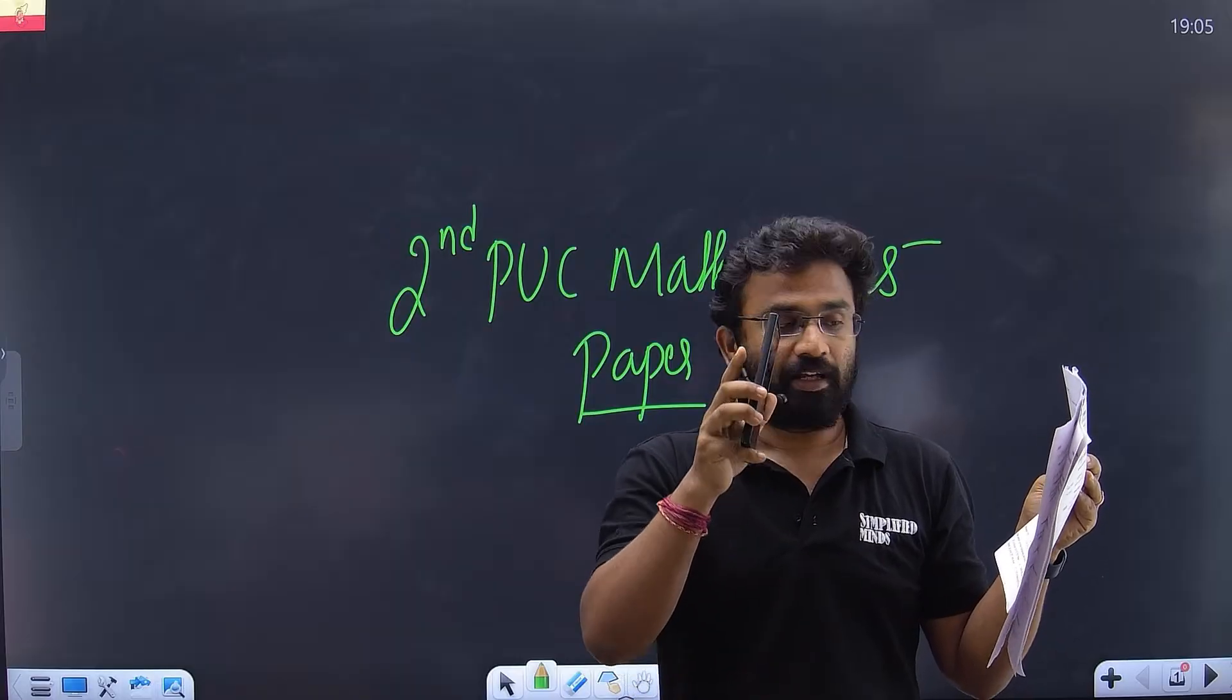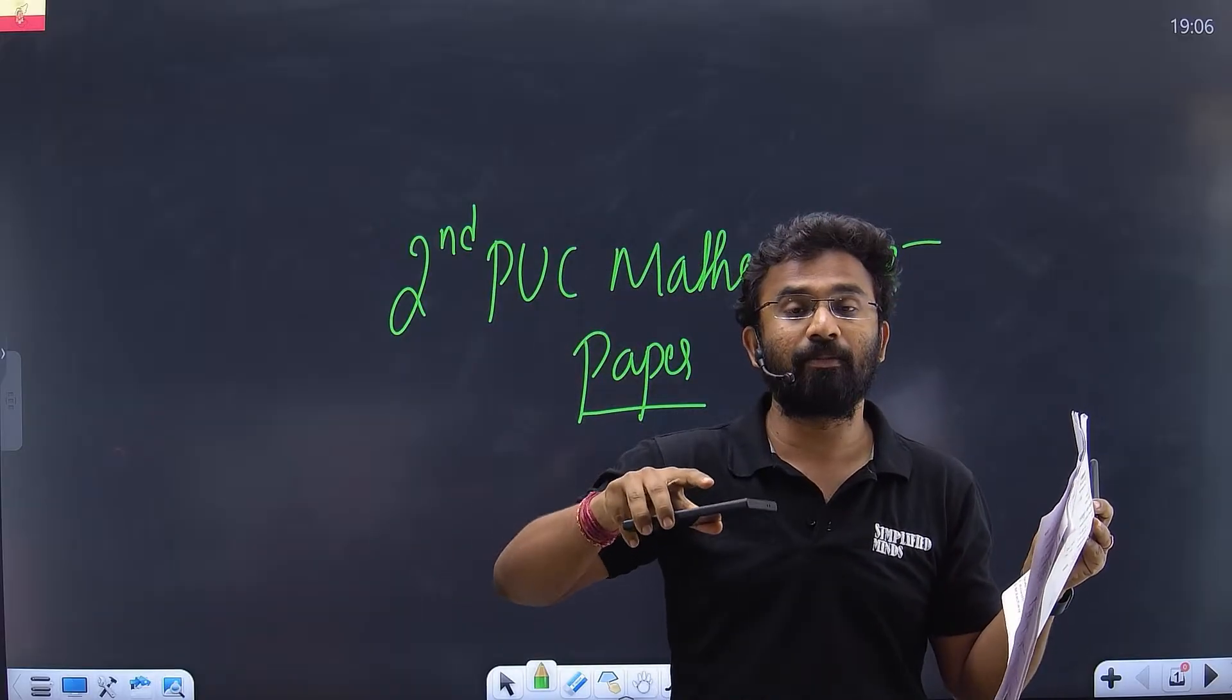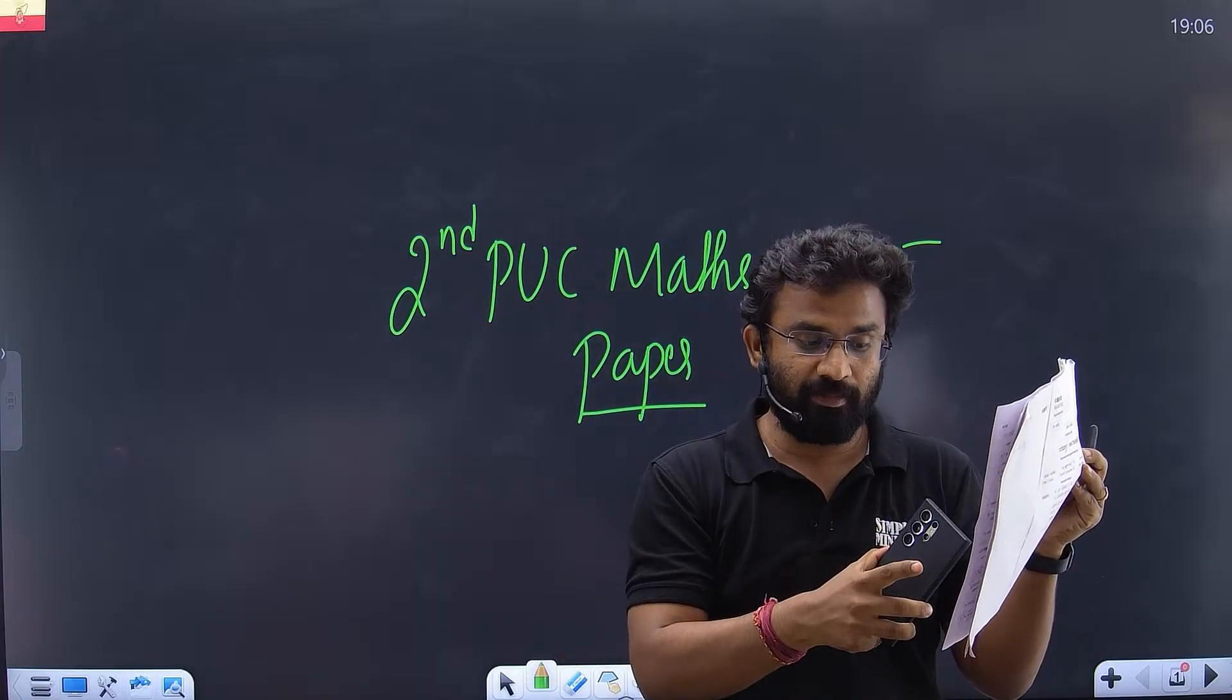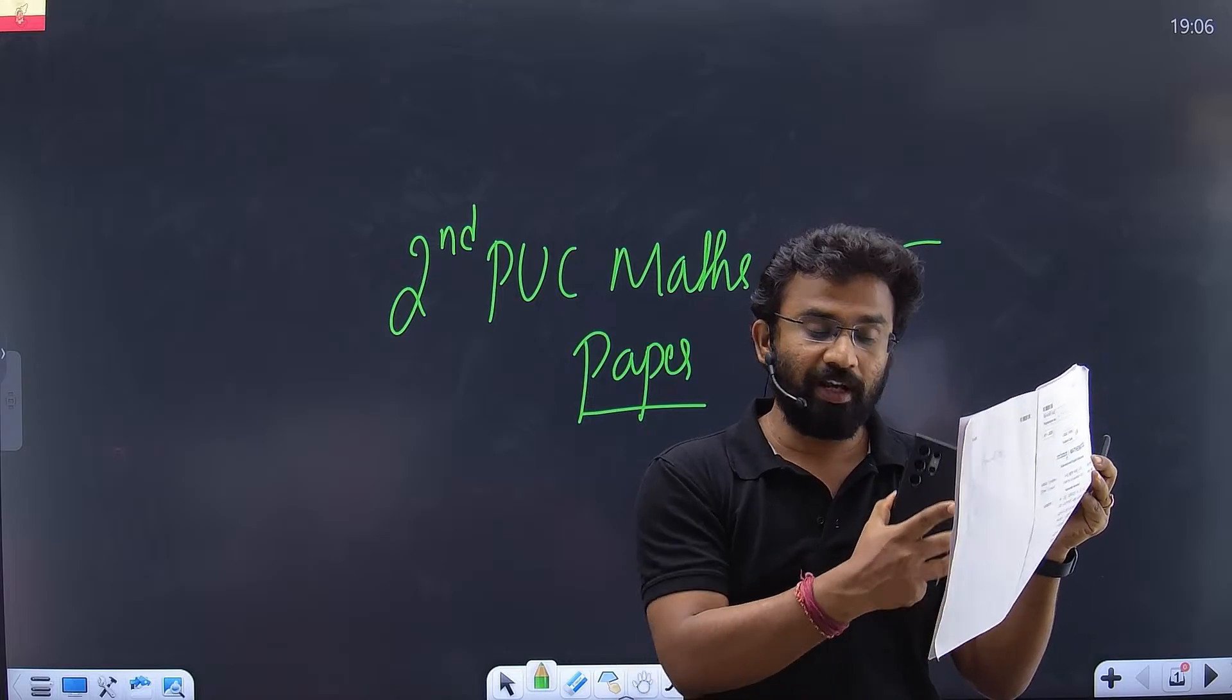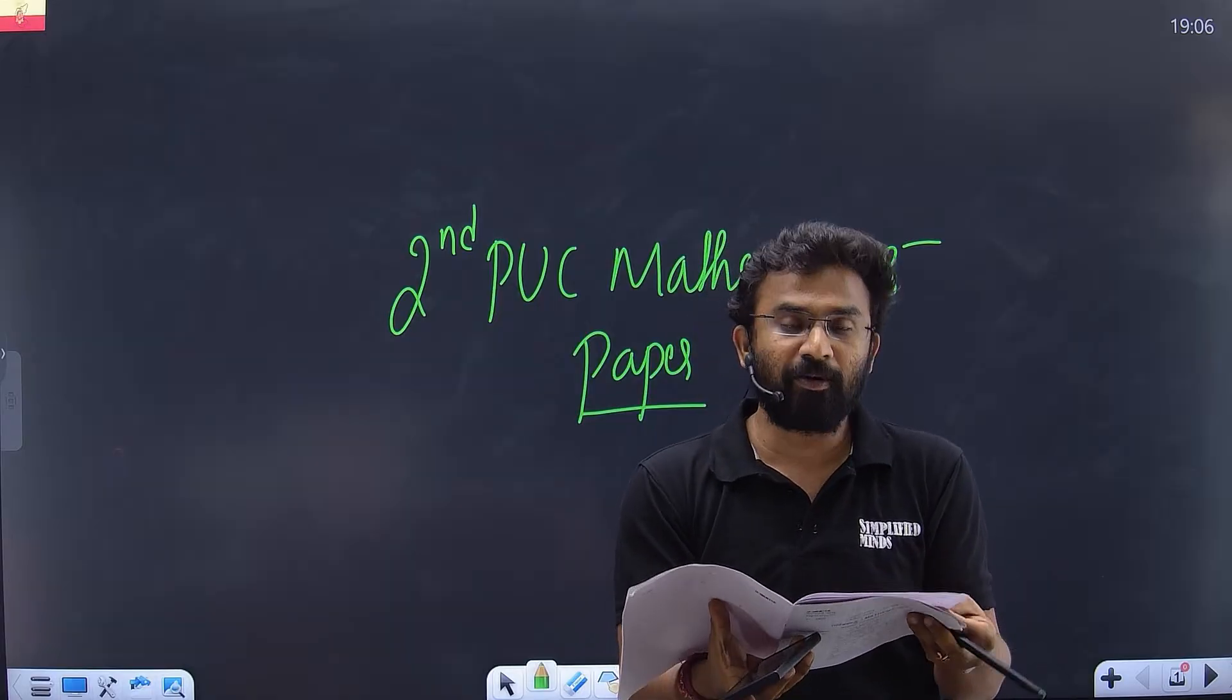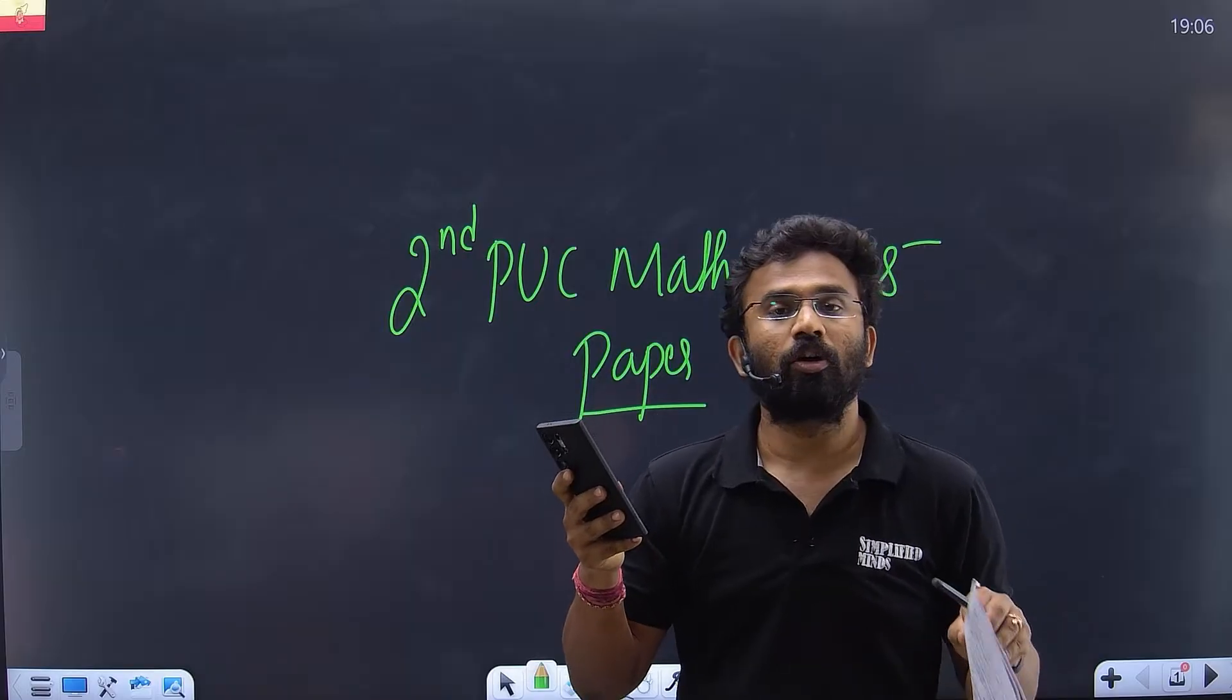For physics, we may expect two marker questions from this chapter only, but in the exam they may give two markers from another chapter. Integration, differentiation, differential equations, application of derivatives, vectors - you were expecting area of triangle and angle between, but they asked perpendicular condition to find K value. These mistakes you should not do again.